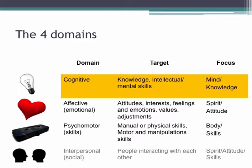We also need to think about the different domains of learning. We have the cognitive domain, which is about knowledge and intellect; the affective or emotional domain, about emotions and values; the psychomotor or skills domain, about physical movement, physical skills, and manipulations; and the interpersonal or social domain — learning through interaction with each other.